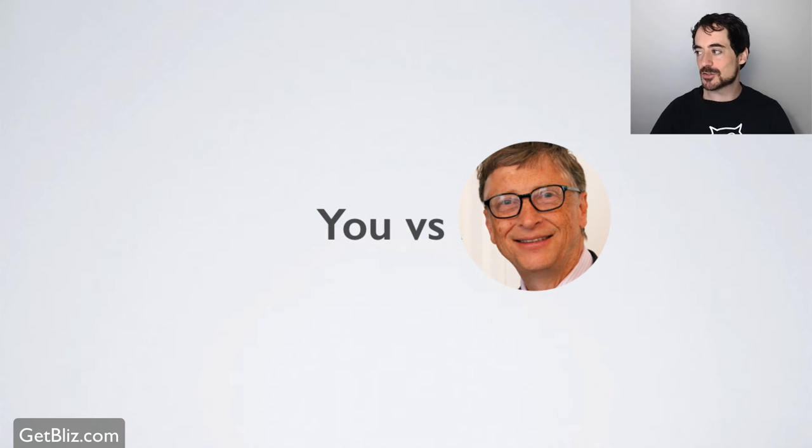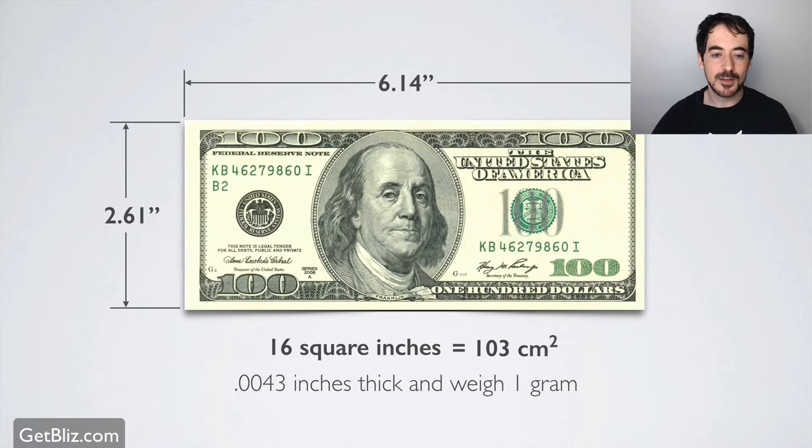Then I wanted to do a really interesting exercise. Let's think about the $100 bill. The $100 bill is 16 square inches, really thin. It's like a piece of paper and it weighs one gram. And it's 6.14 by 2.61 inches. Right, that's it, $100 bill.